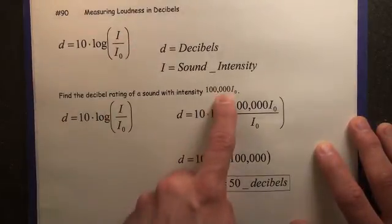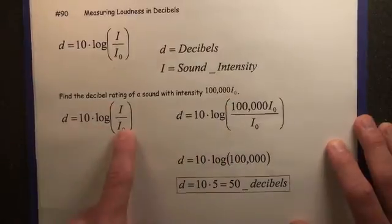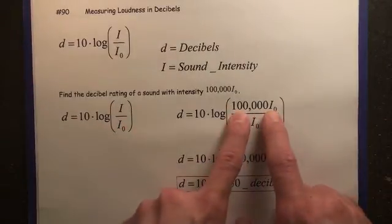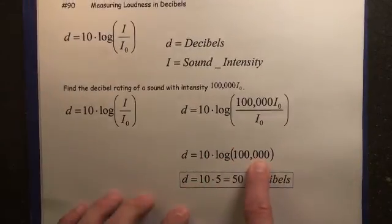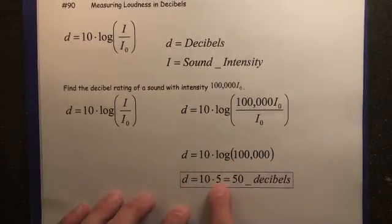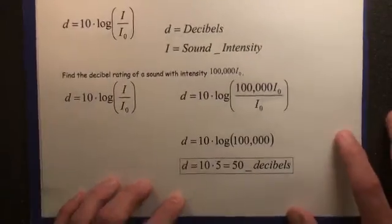I is going to equal 100,000 times I sub zero. There's our formula. So we're going to plug 100,000 I sub zero in the numerator. The I sub zeros cancel out. We're going to do log of 100,000, which is 5, and then 10 times 5, which is 50, so 50 decibels.